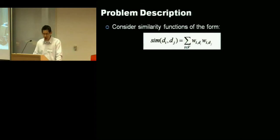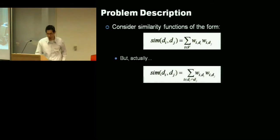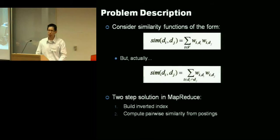So we looked at similar functions of this form. So inner products between weighted feature vectors. And so in actuality, you can replace it with the second form here. The difference being a feature will only contribute to a final similarity comparison if it has known non-zero values in both feature vectors. So you can replace it with an intersection. So we came up with what we think is a cute two-step solution in MapReduce. One is building the inverted index first, and second is directly computing the pairwise similarity from the postings. So building the inverted index is very standard.